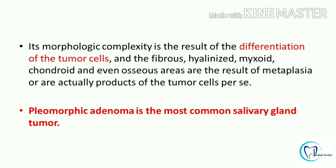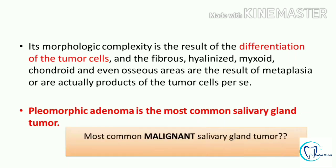Pleomorphic Adenoma is considered to be the most common salivary gland tumour. When it comes to the malignant salivary gland tumour, it is mucoepidermoid carcinoma. Please keep this point in mind: whenever there is a question about the most common salivary gland tumour, the answer is Pleomorphic Adenoma. However, when the term 'malignant' is included, the answer is mucoepidermoid carcinoma.